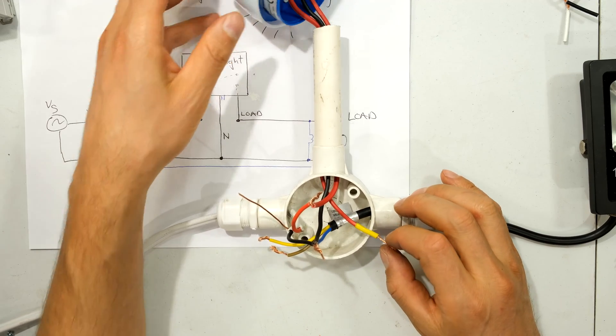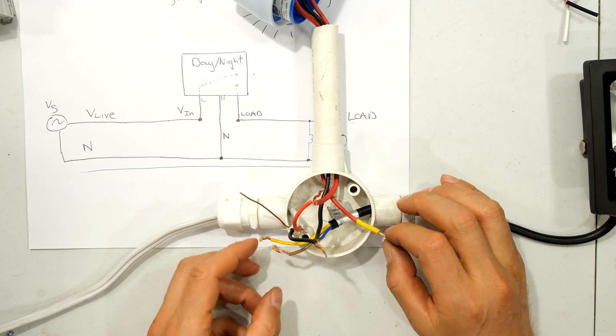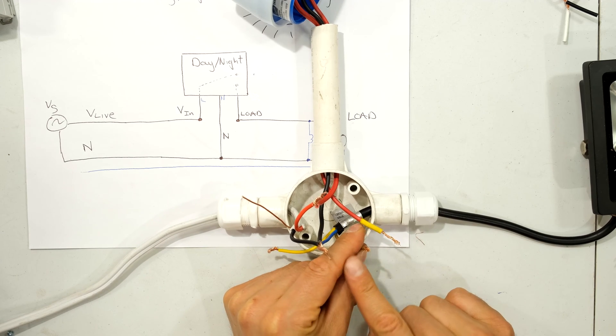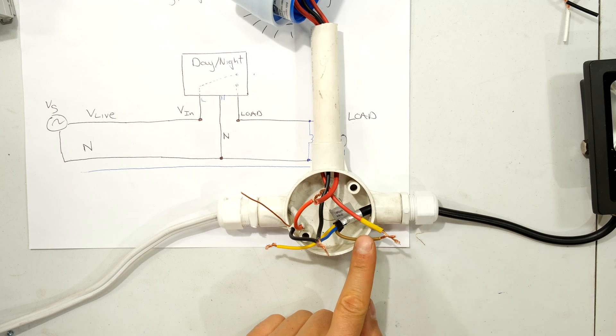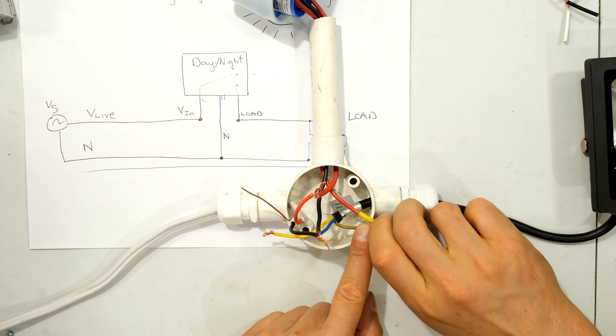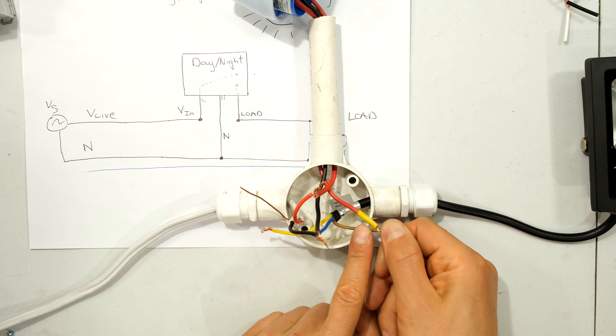Now on the day-night switch, it is labeled as load. And now my load live or my load wire is this brown one over here. This is the live for my load. So my output of my day-night switch and my live wire for my light get twisted together for now.